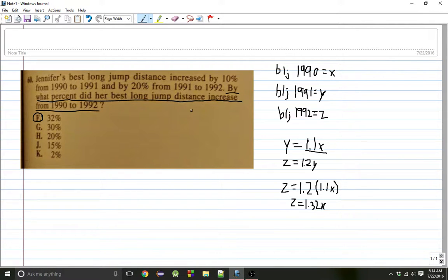So what did we do? We denoted variables for the best long jump in 1990, 1991, and 1992. We set up an equation based on the percentages given, 10%, 20%. And you've got to be careful.